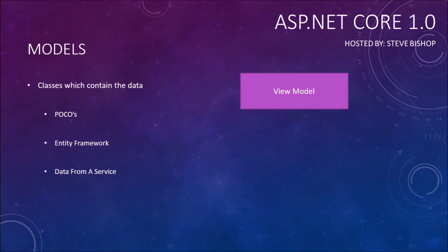A view model in ASP.NET Core is not the same as you would find in WPF applications. The primary difference is that the view model in ASP.NET Core MVC strictly contains data for the view. In WPF it's a little more interactive — view models are a go-between for the view and the model and help you manipulate and manage model data. That's different from an MVC application where a view model is strictly a container holding all the data necessary for your view.